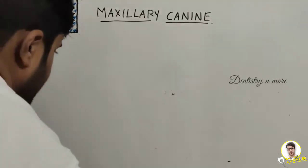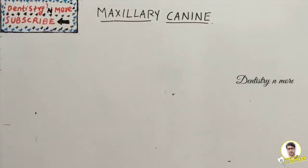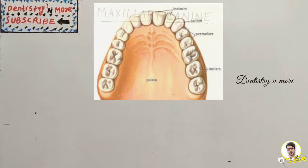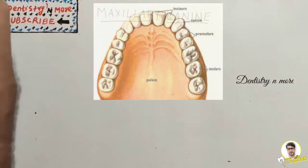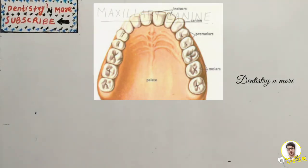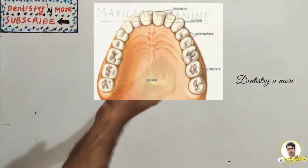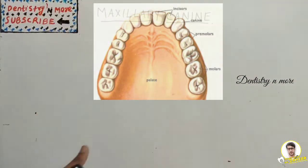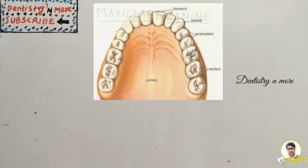Welcome back to another session in Dentistry and More. We are continuing our dental anatomy sessions. The last two sessions were about maxillary central and lateral incisors. Next we have the maxillary canine. There are four canines — two maxillary and two mandibular. We are focusing only on the maxillary canine here; the next video will cover the mandibular canine, followed by the premolars of the maxilla.